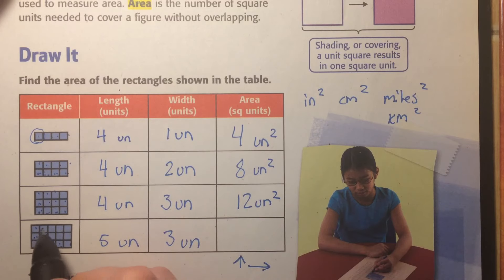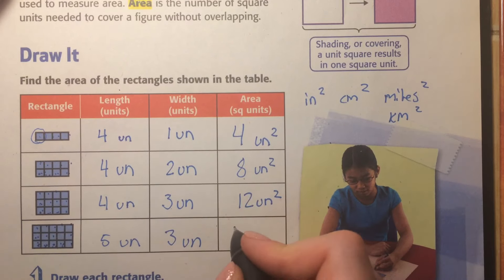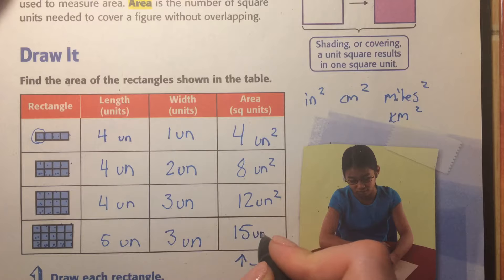And, one, two, three, four, five, six, seven, eight, nine, ten, eleven, twelve, thirteen, fourteen, fifteen. Fifteen units squared.